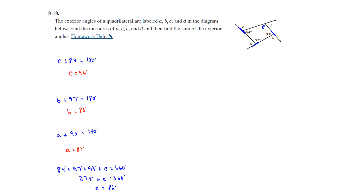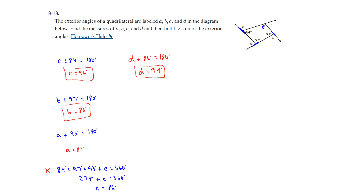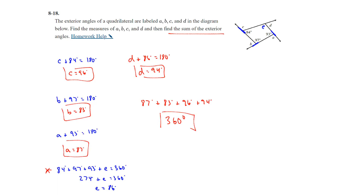I found A, B, and C by doing 180 minus each interior angle. Then, adding the four interior angles to equal 360, I set E as 86 degrees. To find D: D + E = 180, so D + 86 = 180, meaning D = 94 degrees. For the sum of exterior angles: 87 + 83 + 96 + 94 = 360 degrees.